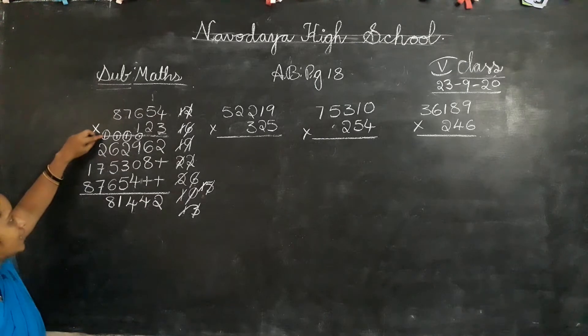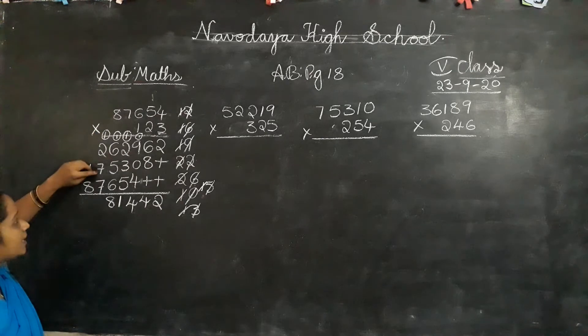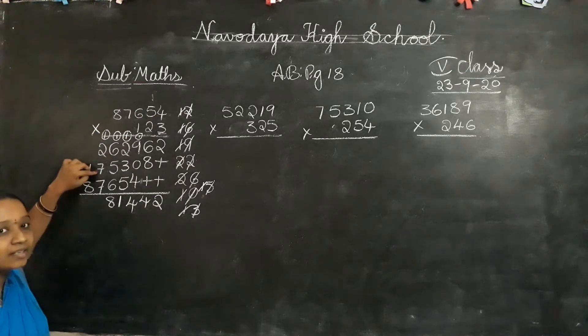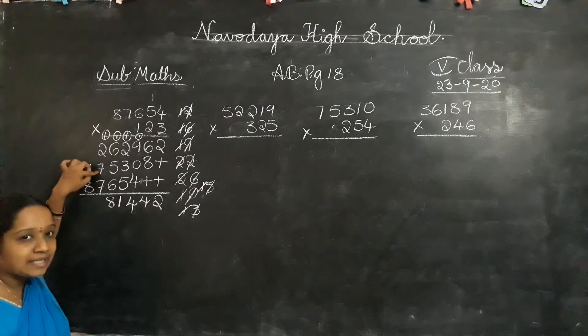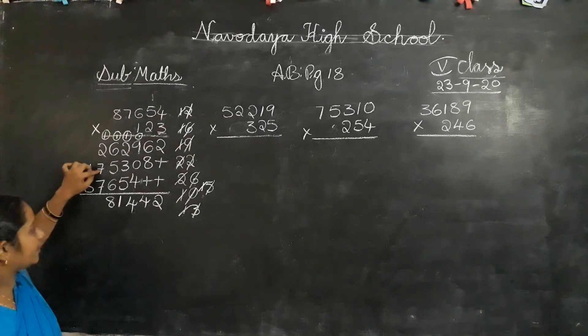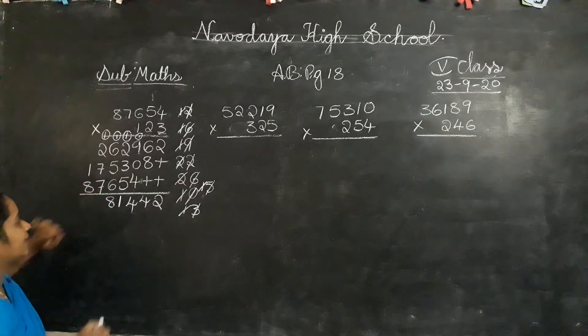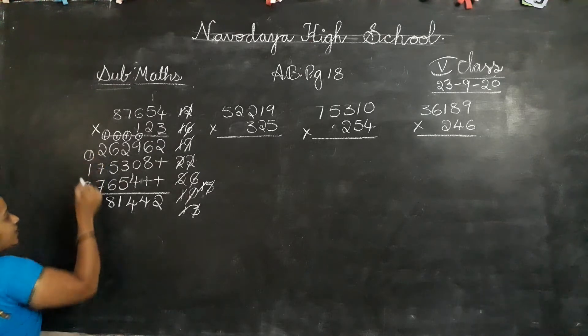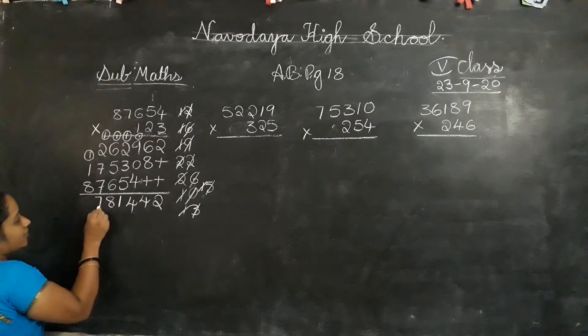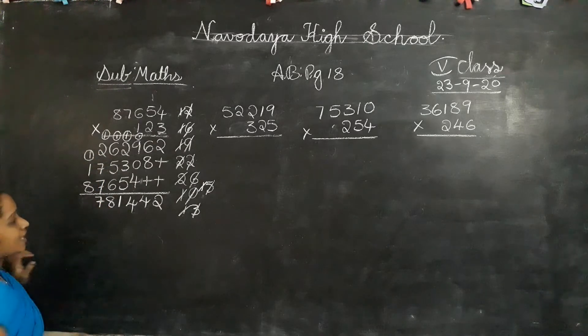2 plus 1? 3. 3 plus 7? 10. 10 plus 7? 17. 1 is carry forward, 7 is in the answer place.